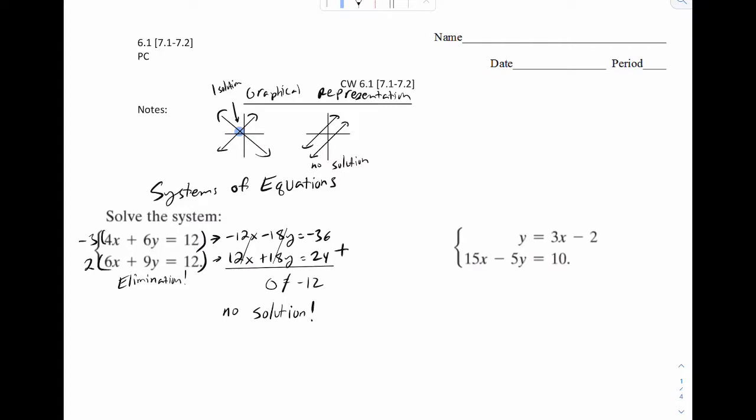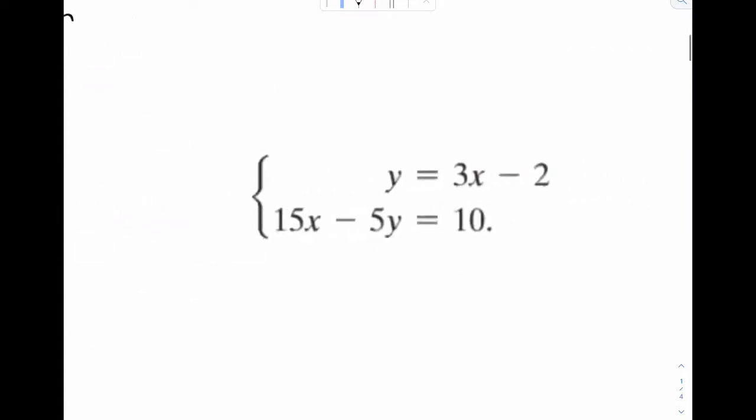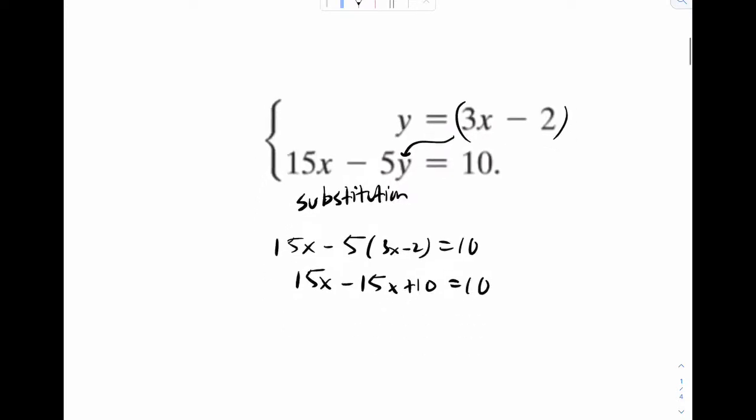Now for this problem, let's try it out. We could use elimination, but in this problem, we're going to use substitution. So we're going to plug this thing in right here. So 15x minus 5 times 3x minus 2 equals 10. And in this one, we're going to notice something kind of weird. The 15x cancels out and we get 10 equals 10, which is true.